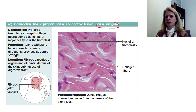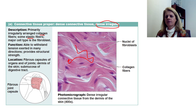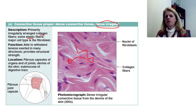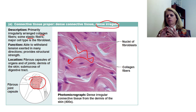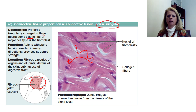Dense irregular connective tissue means the fibers are not parallel — they go in all directions. It still has collagen but also a little more elastic fibers. It's very strong but more movable, so you'd find this in joints with greater mobility — things that can move in more than one direction. Because the fibers aren't all parallel, they're more flexible and can move in different planes.